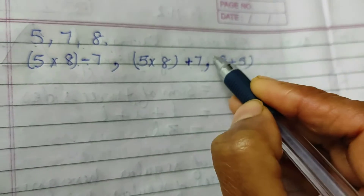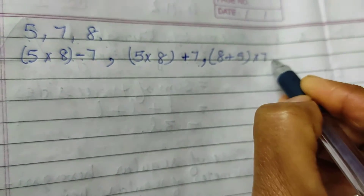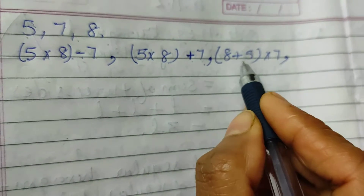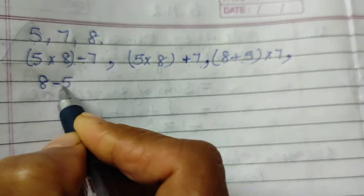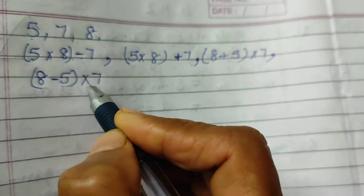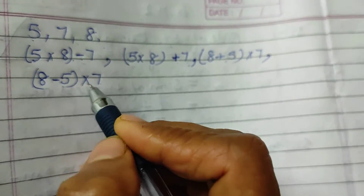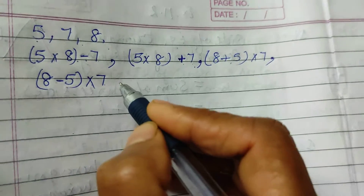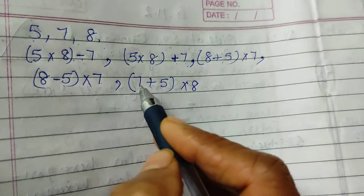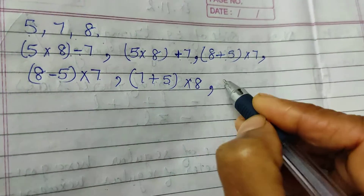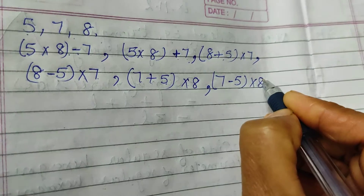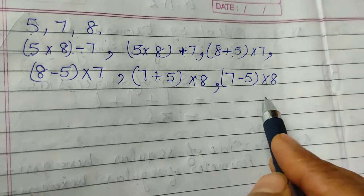Next expression: bracket 8 plus 5 close bracket multiply by 7। फिर bracket 8 minus 5 close bracket multiply by 7। आप अपनी तरफ से कोई भी expression बना सकते हैं — plus, minus और multiply का sign use करके। Next: bracket 7 plus 5 close bracket multiply by 8। फिर bracket 7 minus 5 close bracket multiply by 8। Similarly, आप इसकी और भी कई expressions बना सकते हैं।